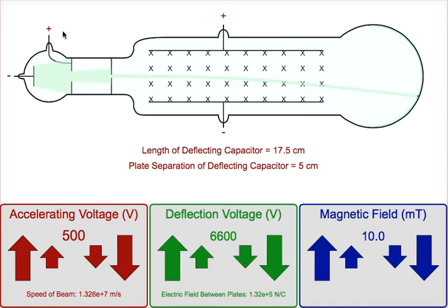This is the Thomson's cathode ray tube lab and I just want to give you a quick overview of what you're going to do. I suggest starting with an accelerating voltage that is constant.